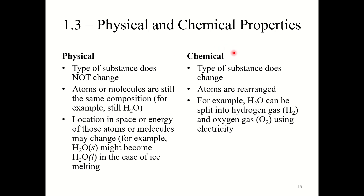With chemical properties, they depend upon the arrangement of the atoms in space and the chemical makeup of that matter. When something changes chemically, the type of substance does change — the atoms are rearranged, bonds are broken, bonds are formed. For example, when water is split into hydrogen gas using electricity, this would be a chemical change because the atoms have been rearranged.